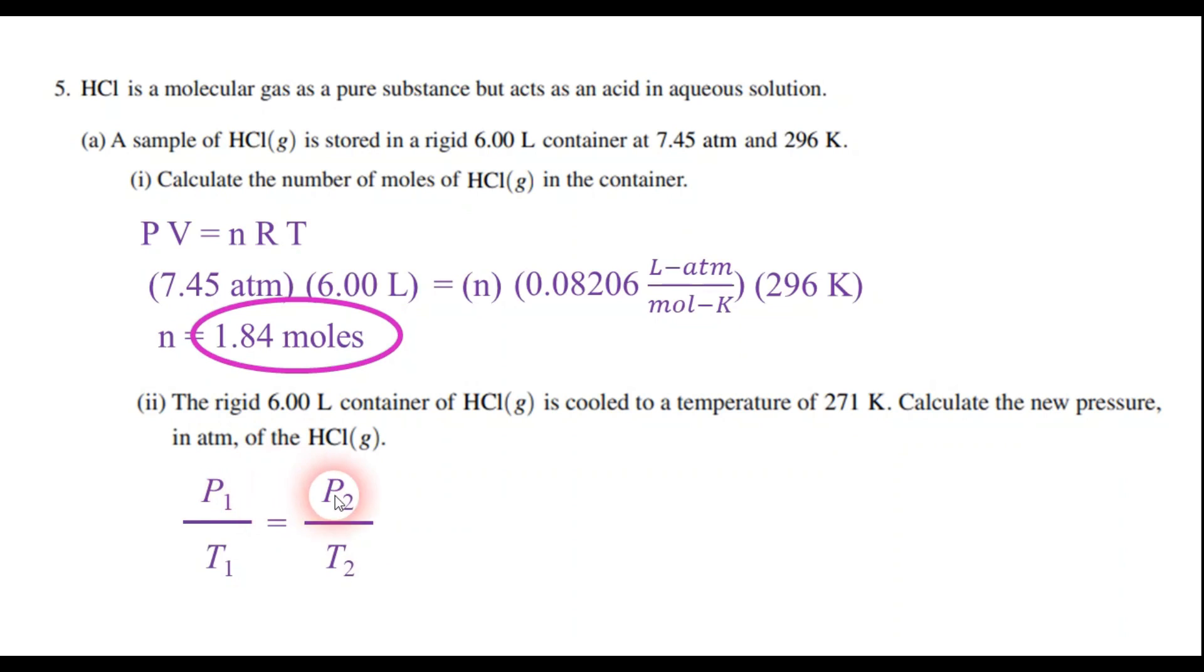And so just plug and chug. P1, your starting pressure, is the same as it was before, it was the 7.45 atmospheres we had from part A1. And the T1, the starting temperature, is the same as it was before, 296 kelvins. Our P2 is what we're trying to solve for, that new pressure. The new temperature is 271 kelvins. So we just cross-multiply and divide, and you should get an answer that P2 equals 6.82 atmospheres.